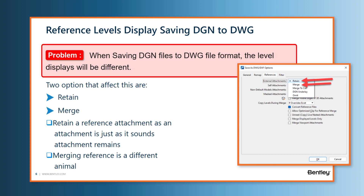We're going to be looking at three different scenarios. Scenario number one is where a DGN file has an external reference file with an external nested reference attachment that all share levels in common.